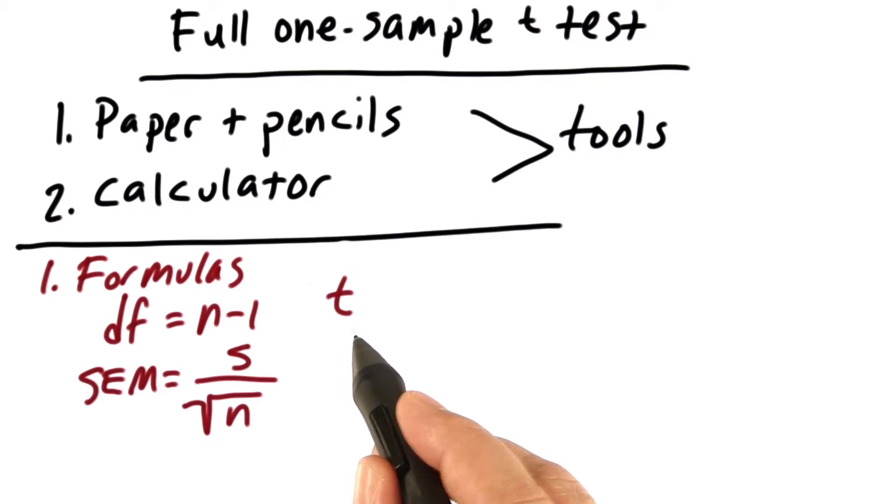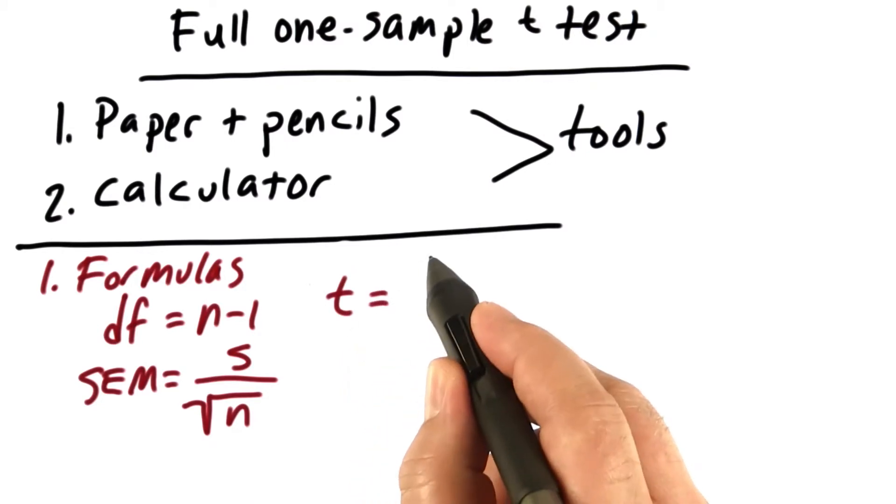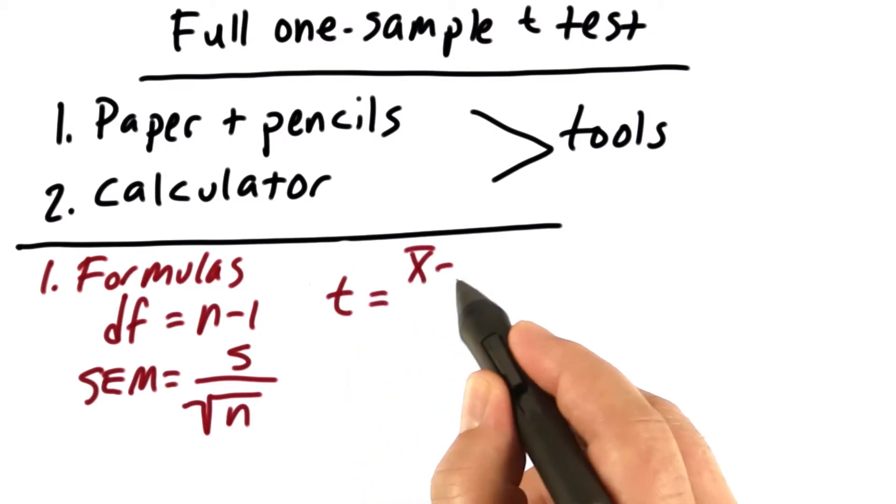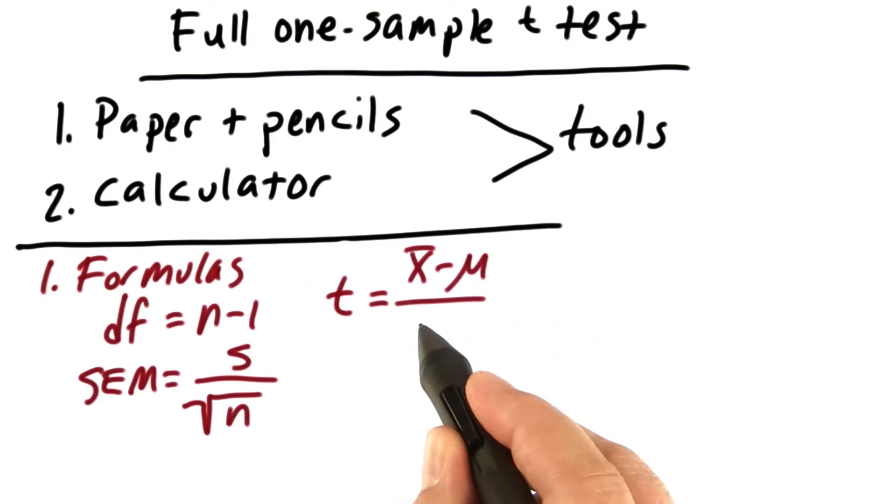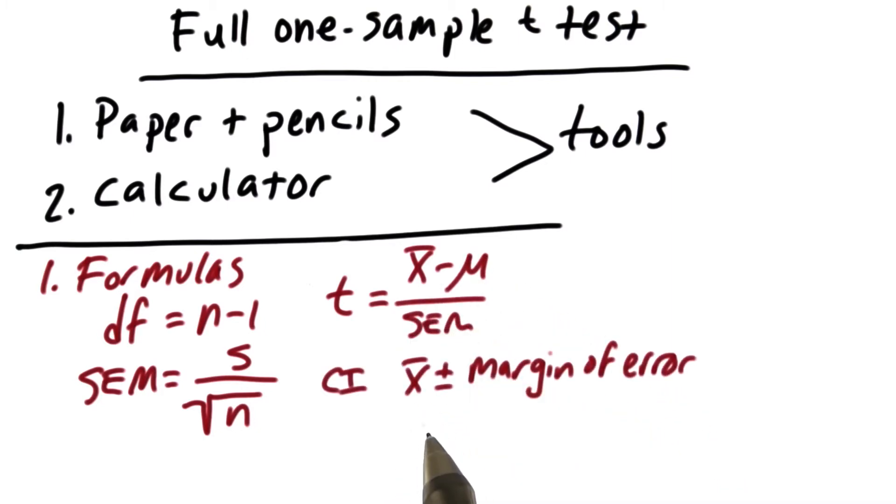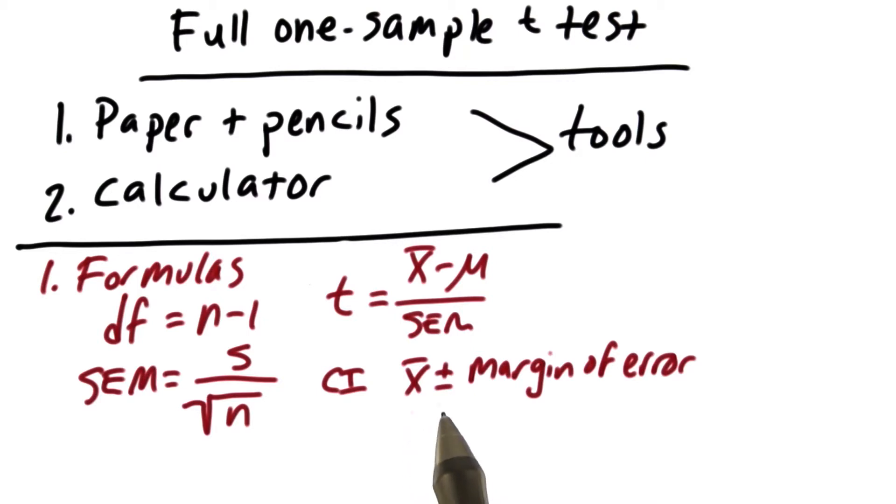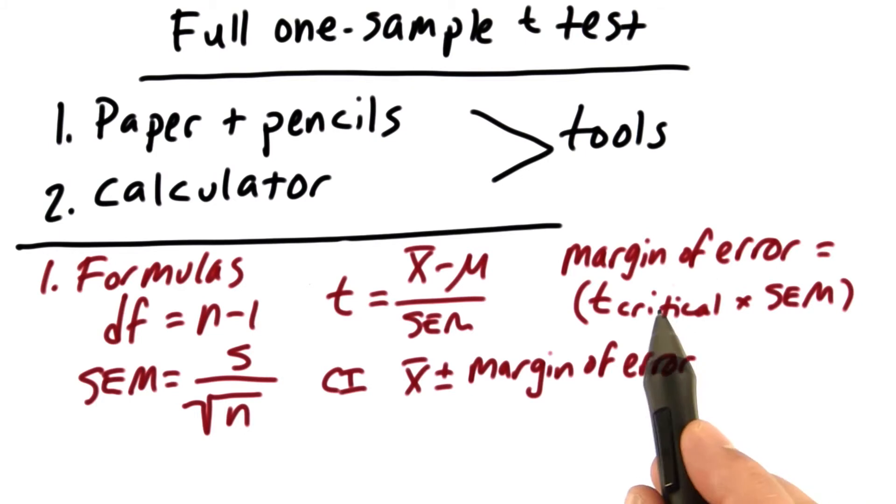You're going to need the formula for the one-sample t-test. Recall that is the sample mean minus the population mean divided by the standard error of the mean. The formula for the confidence interval is x-bar plus or minus the margin of error. Remember, the formula for the margin of error is t-critical times the standard error of the mean.